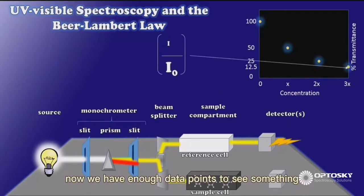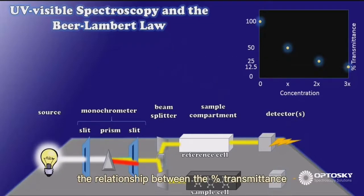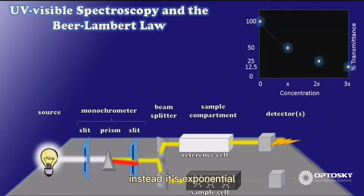Now we have enough data points to see something very interesting here. The relationship between the percent transmittance and the concentration of a sample is not linear. Instead, it's exponential.